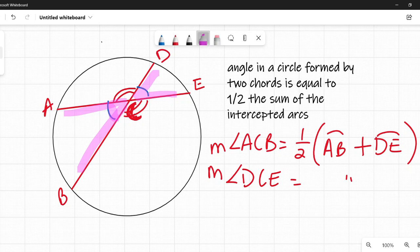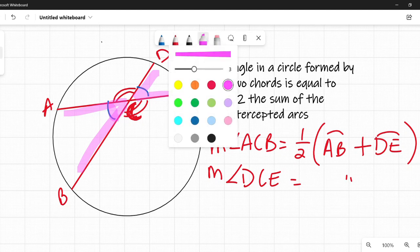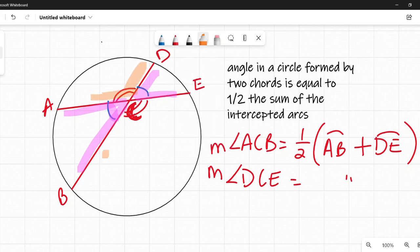And this is going to be true for ACD and BCE. They are going to be each equal to one half the sum of the intercepted arcs.